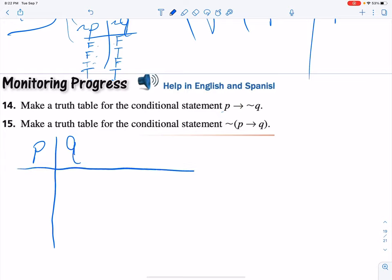So I'm going to make a P column and a Q column. And now for my first problem, I need the negation of Q. So I'm going to put that column in here as well.